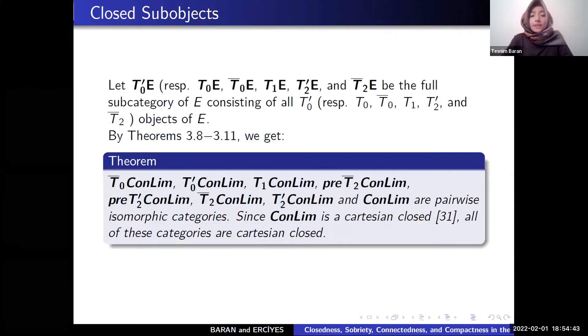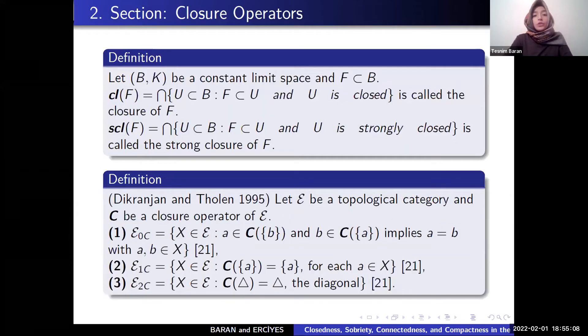Let 0 prime A be the full subcategory of A consisting of all T0 prime objects of A. We get these full subcategories are pairwise isomorphic categories and closure operators. Let (B,K) be constant limit space and F subset B.